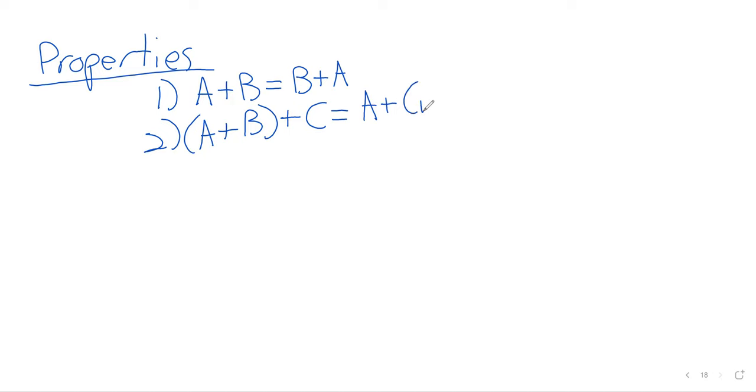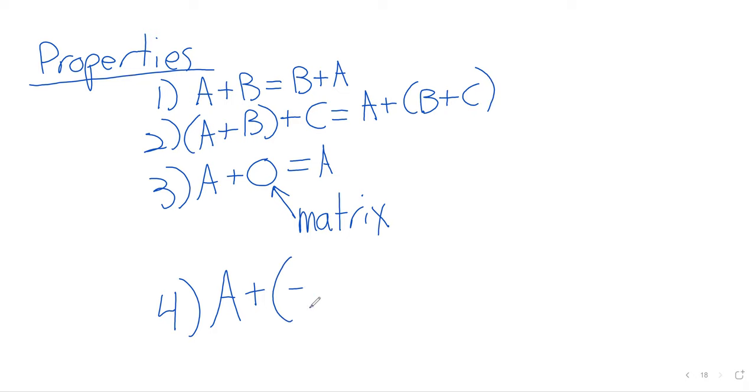So addition is commutative and associative. The zero matrix doesn't get any special notation. We just write the number zero and you use context clues to figure out that this must be the matrix of all zeros. But adding zero doesn't do anything. Adding a matrix and its additive inverse gives you the zero matrix.